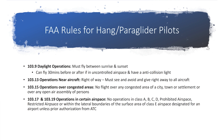The big ones: 103.9 is daylight operations — you must fly between sunrise and sunset. There is an exception though. You can fly in uncontrolled airspace, which is class G airspace, for 30 minutes before or after sunrise and sunset if you have an anti-collision light.